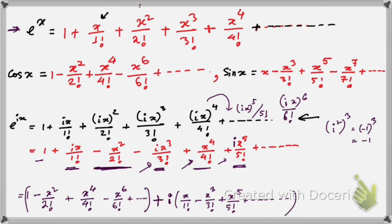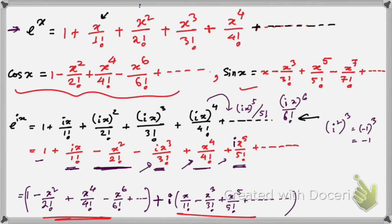Now you can see, if you compare these two groups with the results for cos x and sin x, then the real part is your cos x, and the imaginary part in brackets multiplied by i is your i sin x. That means e to the power ix is equal to cos x plus i sin x.